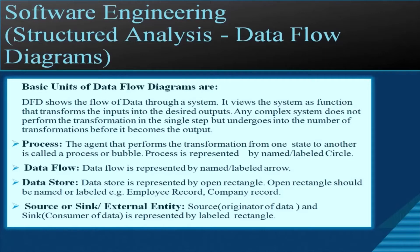The second unit is data flow, represented by a named or labeled arrow, which represents the flow of data in the system. The third unit is data store, represented by an open rectangle that should be named or labeled — for example, employee record or company record. The fourth unit is source or sink, also called an external entity. Source means originator of data, and sink means consumer of data; both are represented by a labeled rectangle.